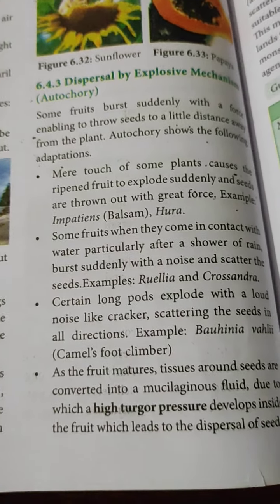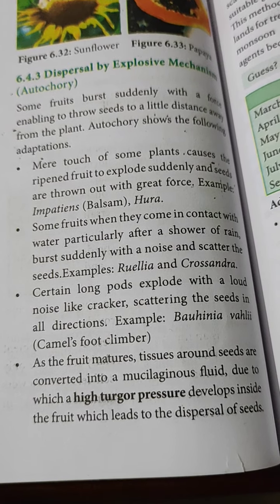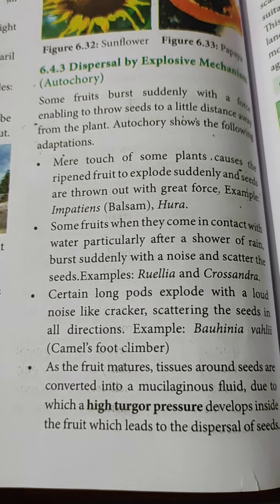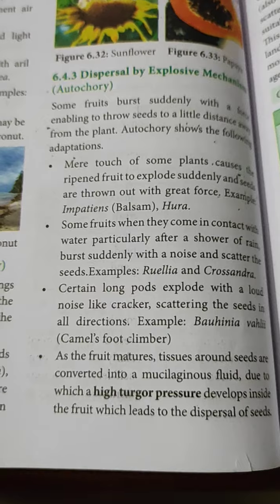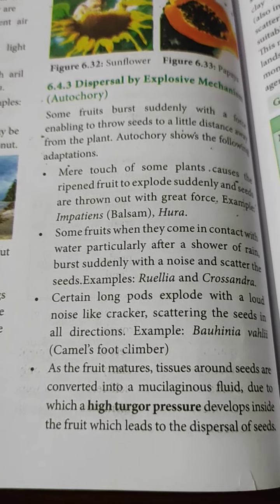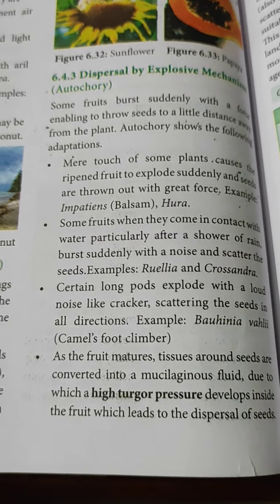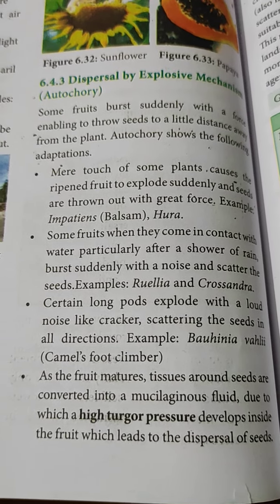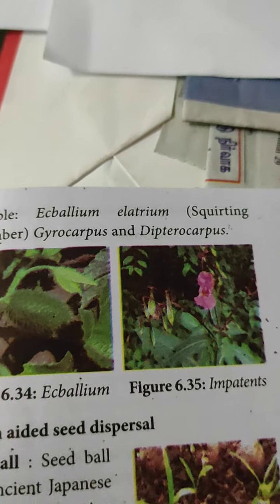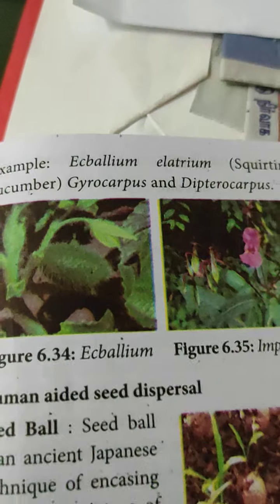In Bauhinia (camel's foot climber), as the fruit matures, the tissues around the seeds are converted into mucilaginous fluid, due to which a high turgid pressure develops inside the pericarp, which leads to the dispersal of seeds. Example: Ecballium elaterium, the squirting cucumber. Other wind-dispersed examples include gyrocarpus and dipterocarpus.